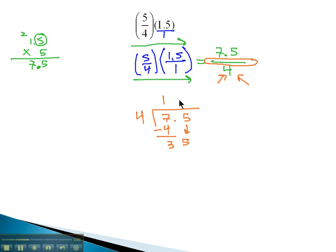4 goes into 35, 8 times. 4 times 8 is 32. Subtracting, we get 3. Add a 0. Bring it down. 4 goes into 30, 7 times. 4 times 7 is 28. Subtracting, we get 2. Add another 0. Bring it down.